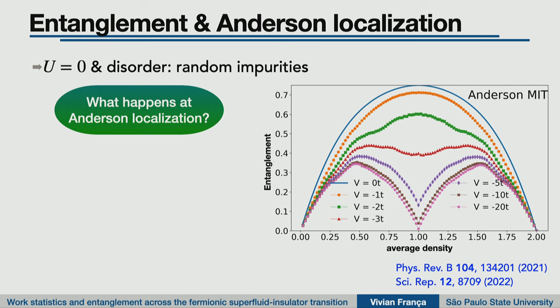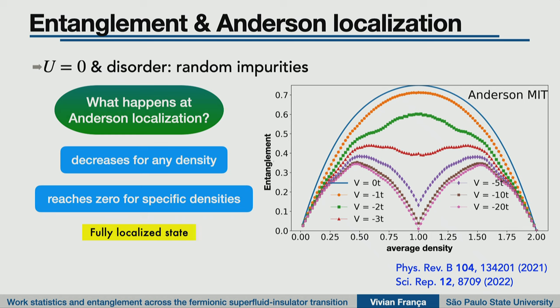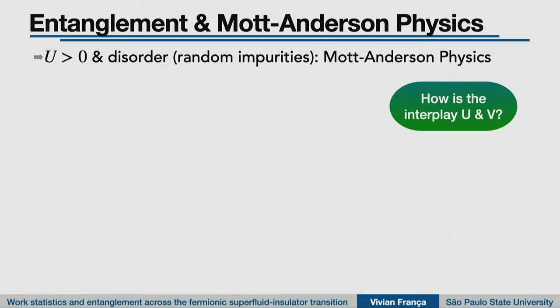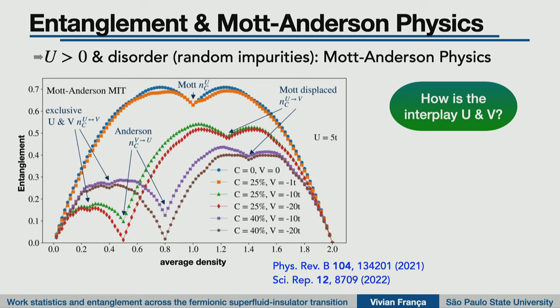If you turn off the interaction and plug in disorder — random impurities in your system — you are in the regime of Anderson localization. From the entanglement point of view, we see that entanglement decreases when you turn on the disorder for any density. But there are specific densities where you reach a fully localized state — meaning zero entanglement — called the fully localized state. We also asked about the interplay between interaction and disorder, combining Mott and Anderson physics.